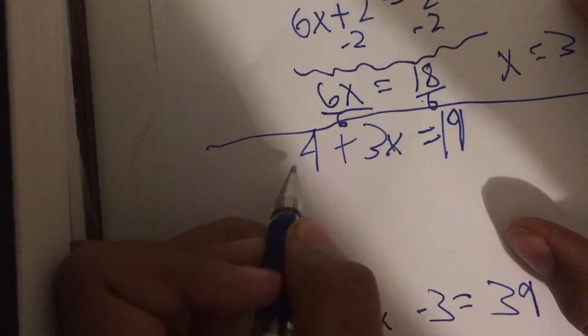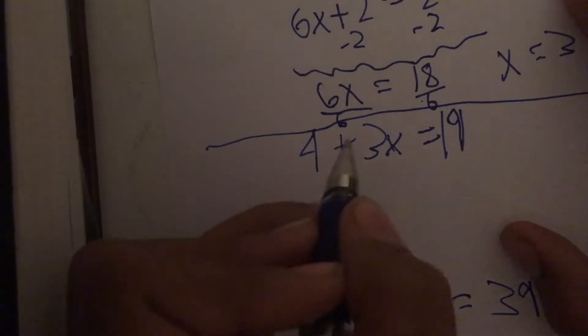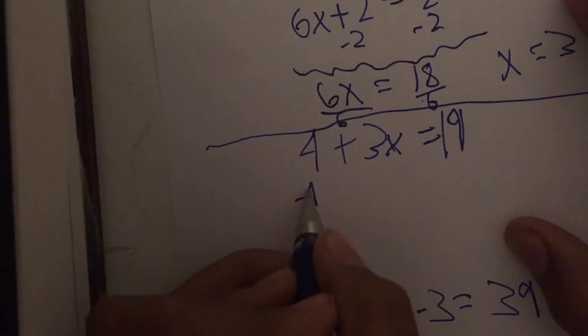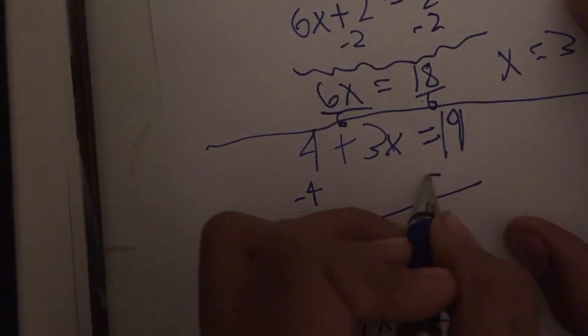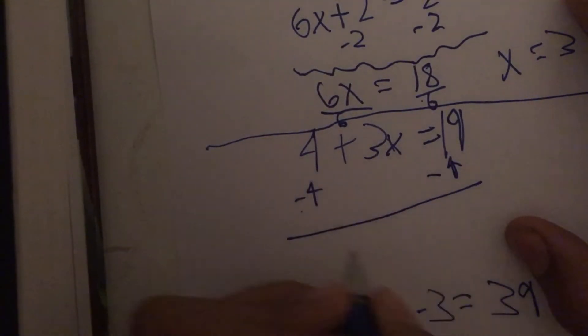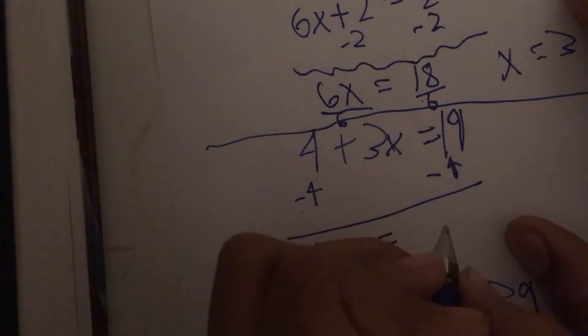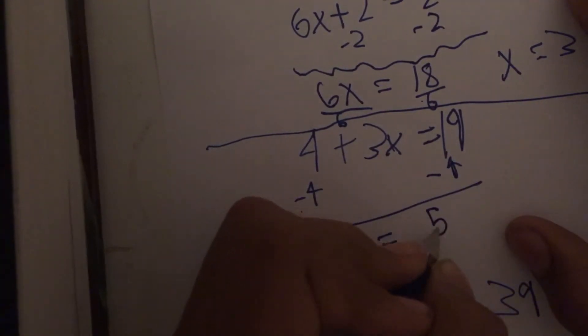4 is our non-variable number, so we're going to subtract that, both sides, and we get 3x equals 19 minus 4, that is going to equal 15.